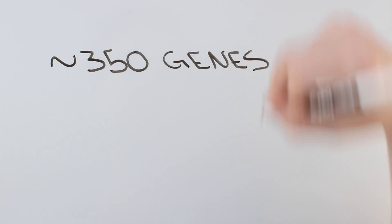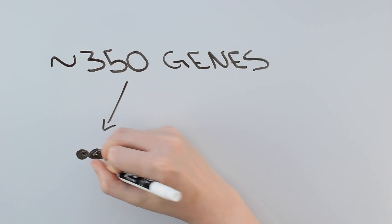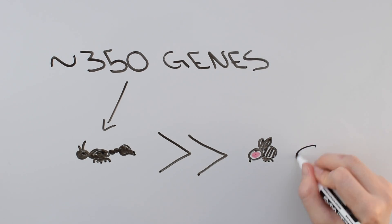Ants have about 350 genes in the odorant receptor family, which is many more than other types of insects like flies or bees. Because they have so many more receptors, and because pheromones play a huge role in the life of an ant, these researchers thought that odorant receptors may be involved in pheromone perception.